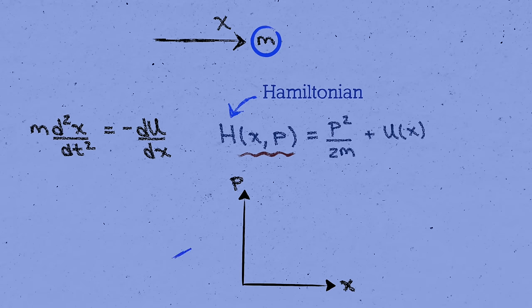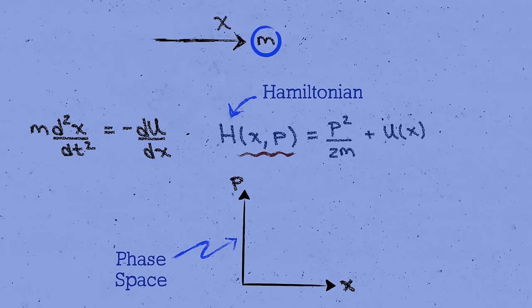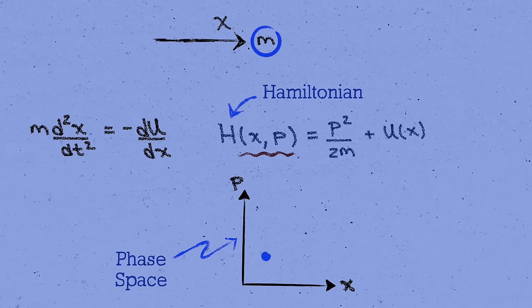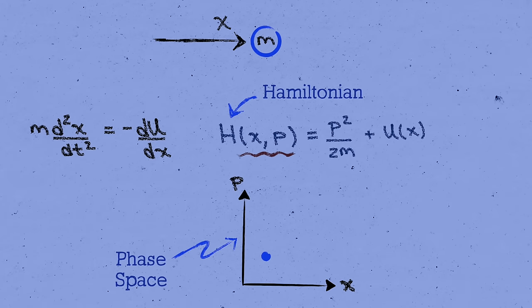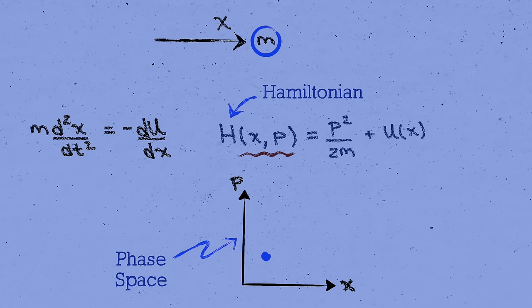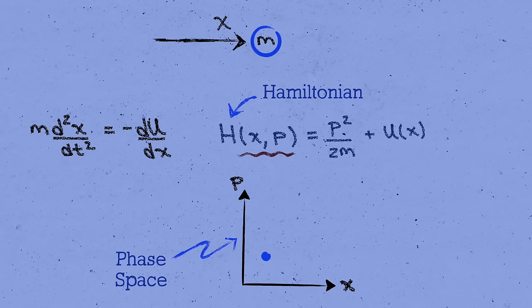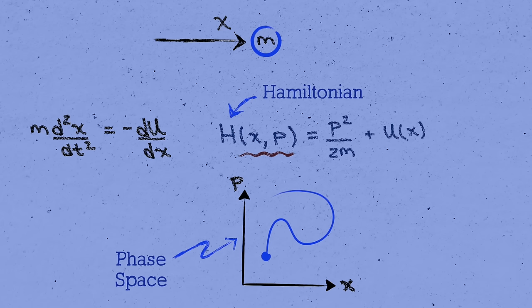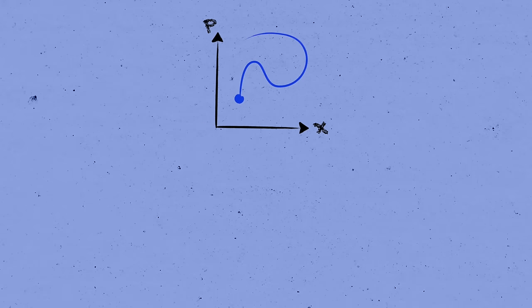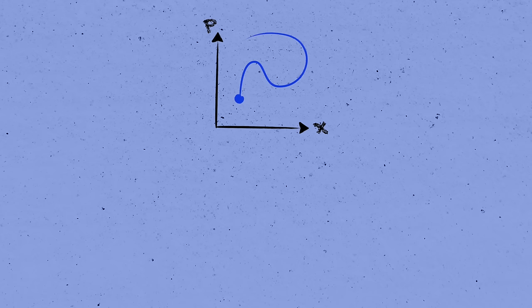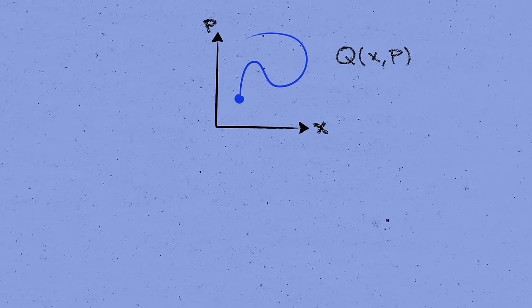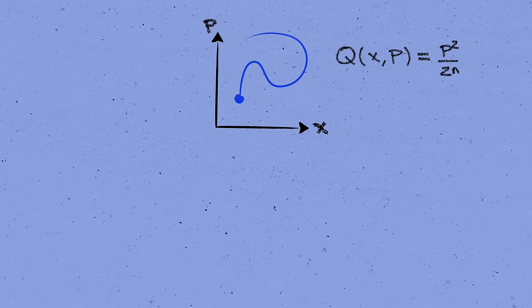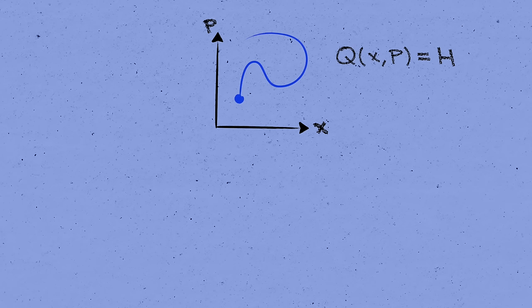The xp plane is called the phase space of our system, and specifying a point in the phase space tells us what the particle is doing at any given instant. After all, giving the position and momentum of the particle at a particular time is equivalent to giving its position and velocity, and those are the initial conditions that we need in order to solve the equations of motion and determine the trajectory of the particle as a function of time. The quantities that we might like to measure about the particle are functions on this space of x and p. Let's denote a generic one by q. For example, we might take q equals x to be the position, or maybe the kinetic energy p squared over 2m, or the total energy q equals h, or anything else.